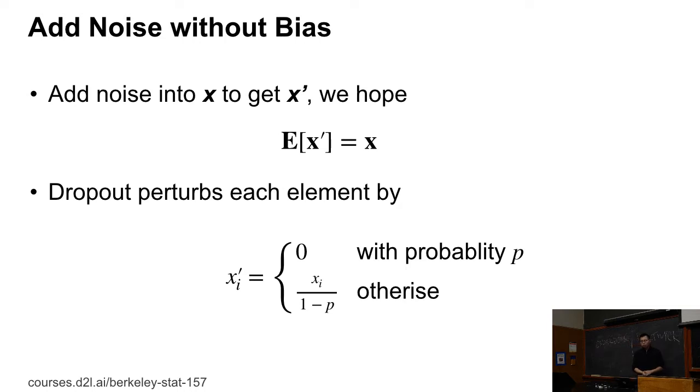In particular, dropout works by choosing a probability P, which we call the dropout probability. Then with probability P, we set Xi to 0. Otherwise, we keep Xi's value but divide by 1 minus P, so that the expectation is still the same. We didn't change the expectation.